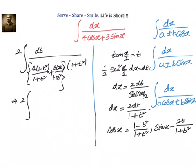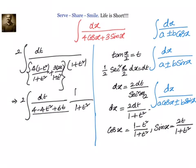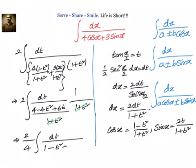We will have 2 integral dt divided by 1 plus t square. When we simplify, we have 4 minus 4t square plus 6t divided by 1 plus t square. We can cancel 1 plus t square. Then what is left out is 2 divided by — we can take 4 out — we will have dt by 1 minus t square plus 3 by 2t.